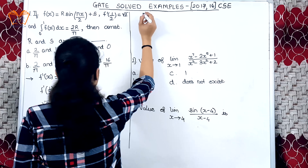L'Hôpital's rule says: take the derivative of the numerator and denominator separately. The derivative of the numerator is 7x⁶ − 10x⁴, and the derivative of the denominator is 3x² − 6x. Substituting x = 1: (7 − 10)/(3 − 6) = −3/−3 = 1. So option C is correct.